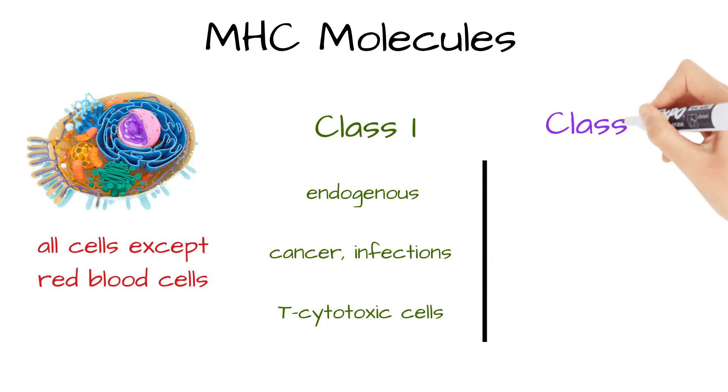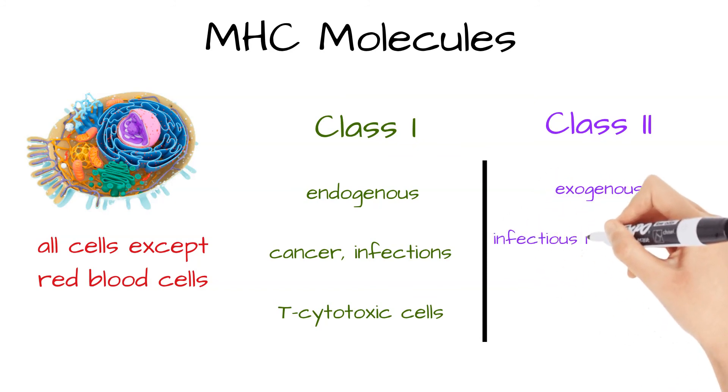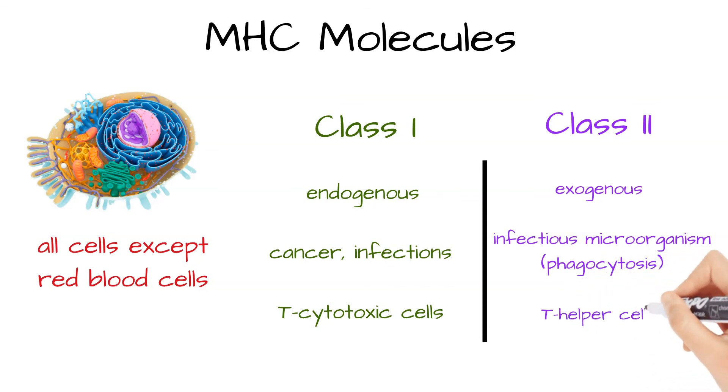Class 2 MHC molecules present exogenous antigens, which originate from outside the body. These antigens are found principally on infectious microorganisms that must initially go through phagocytosis. Antigens presented by this class are mostly recognized by T-helper cells.